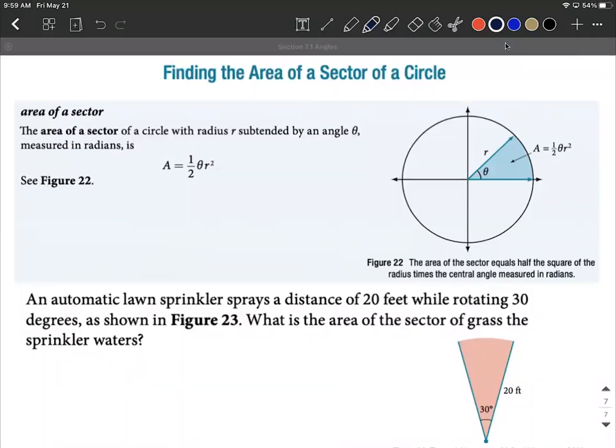Okay, let's find the area of a sector of a circle. So we have a formula for this. We have the area is going to be given by one half multiplied by theta multiplied by R, our radius squared.